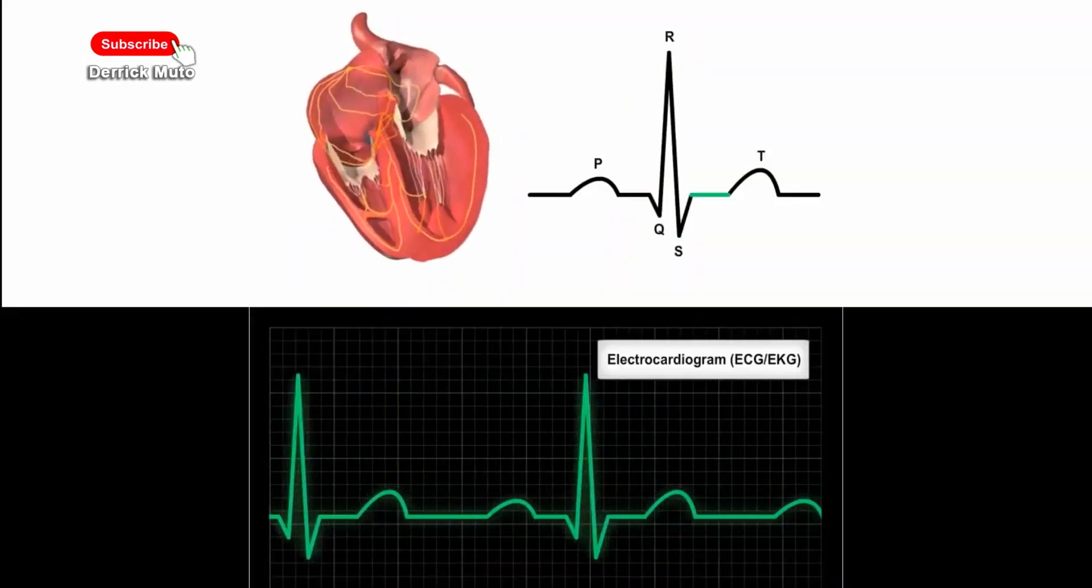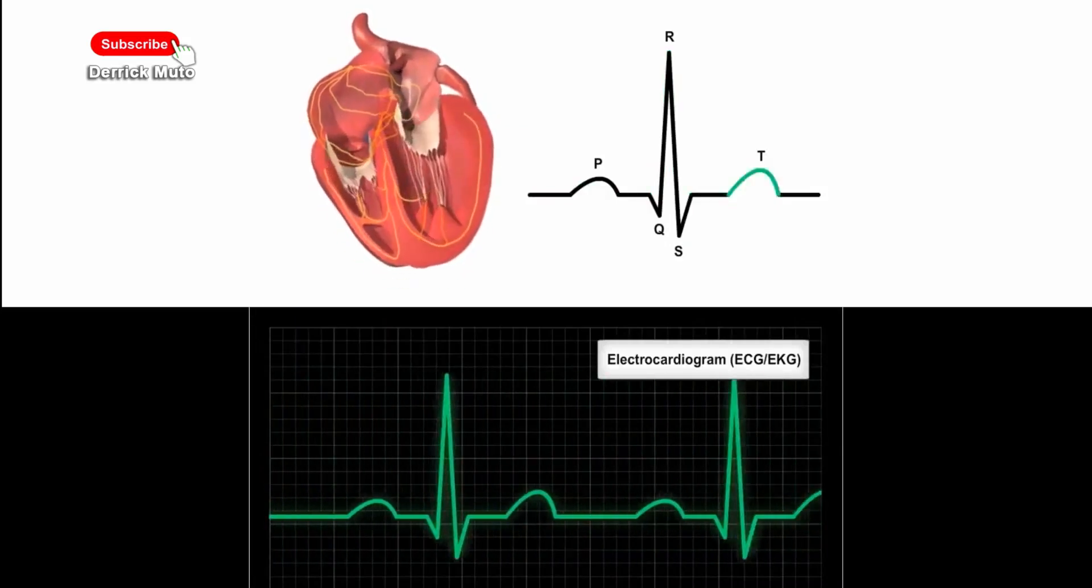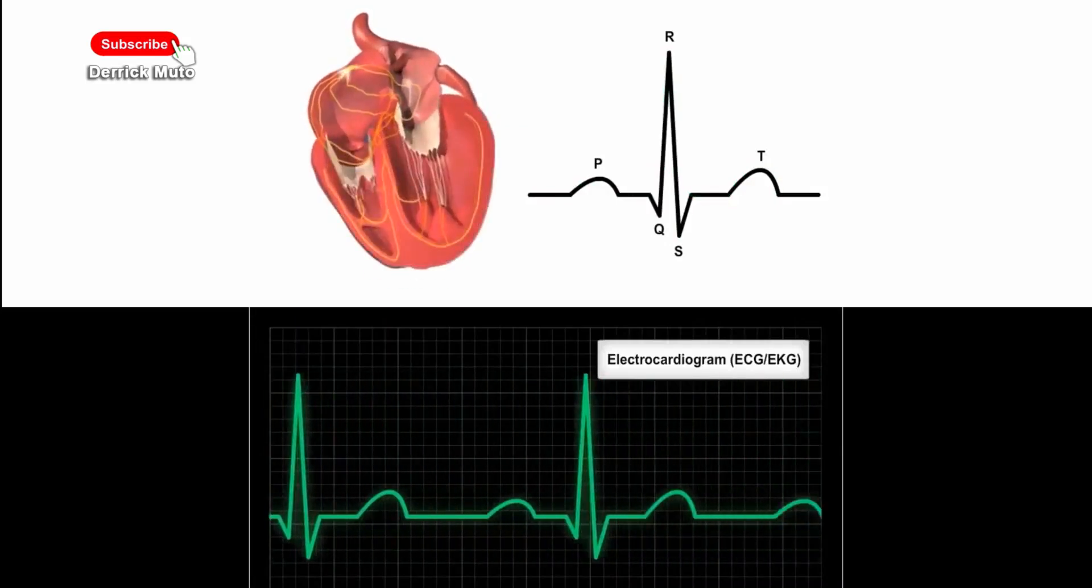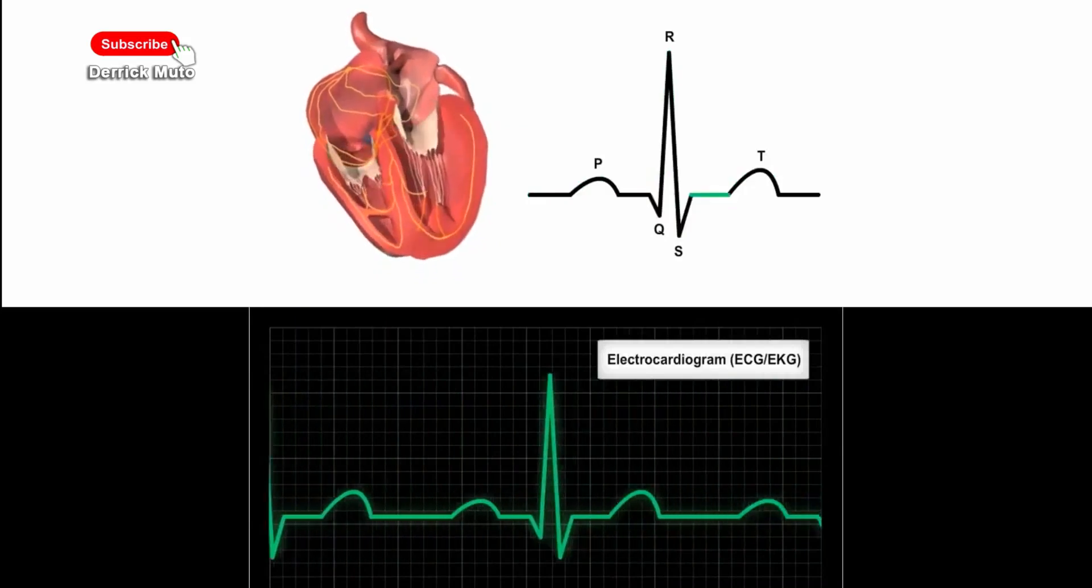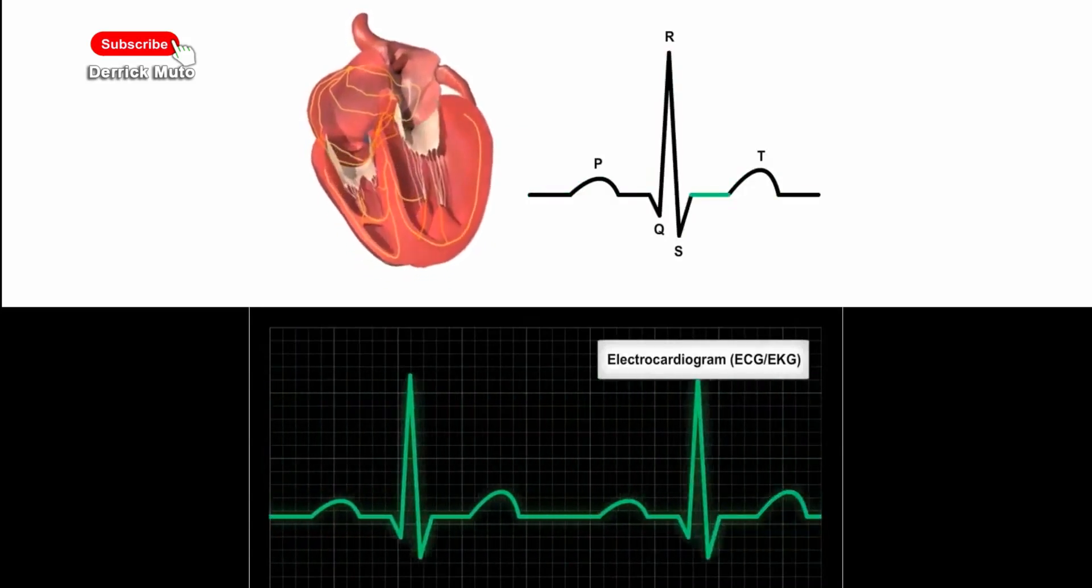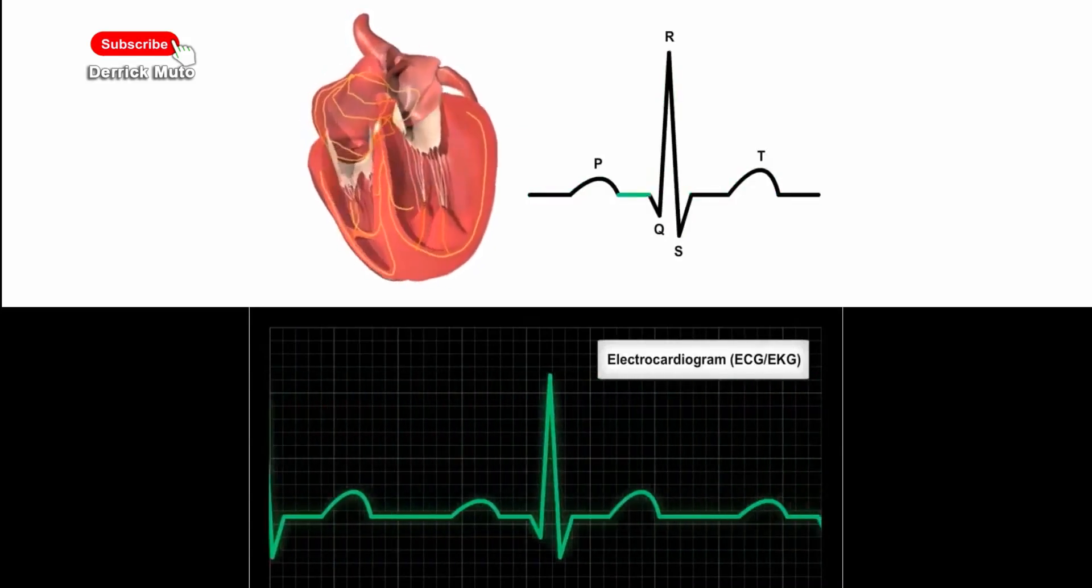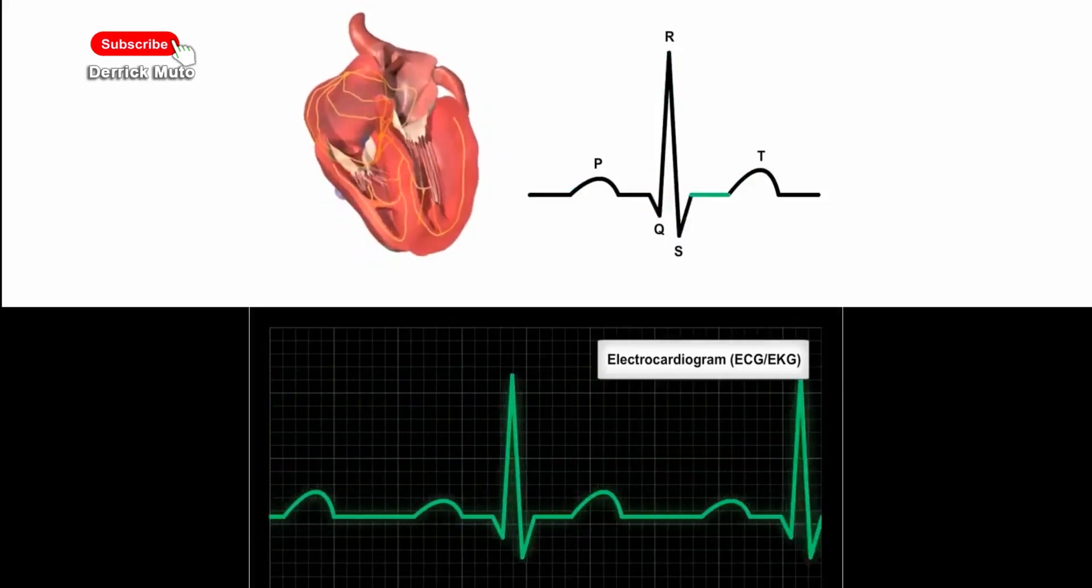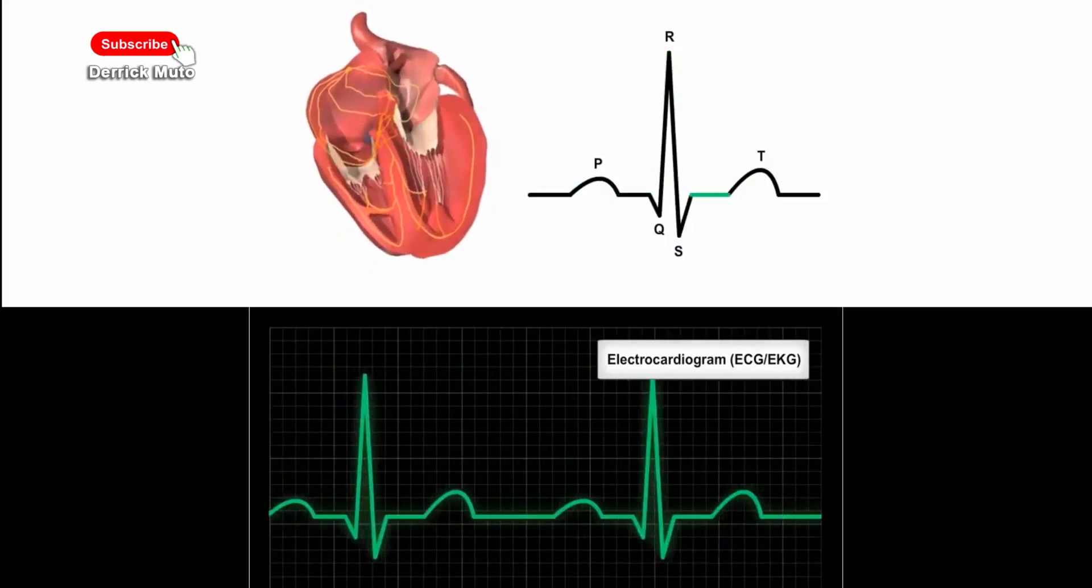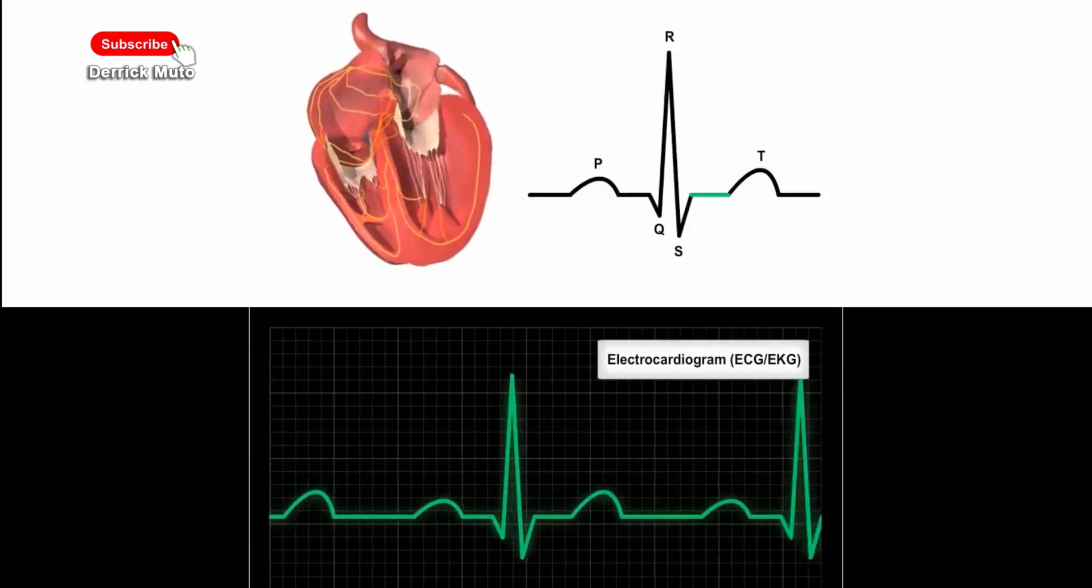The purpose of an ECG is to show how fast the heart is beating, that is the rhythm of the heartbeat, whether steady or irregular, and the strength and timing of the electrical impulses as they move through the different parts of the heart.